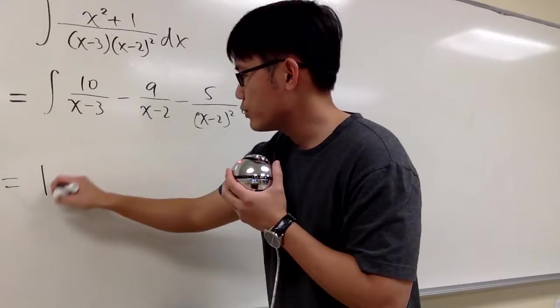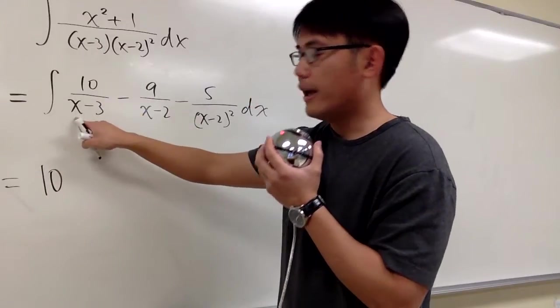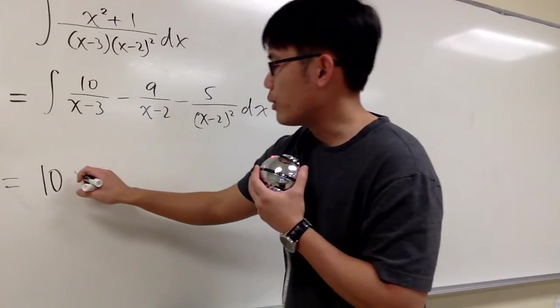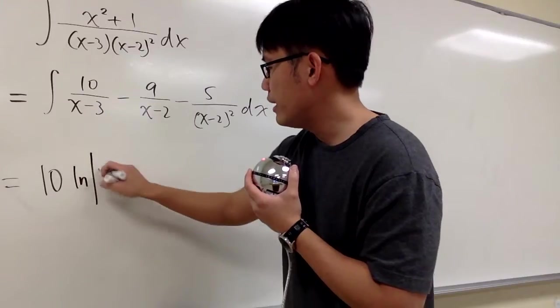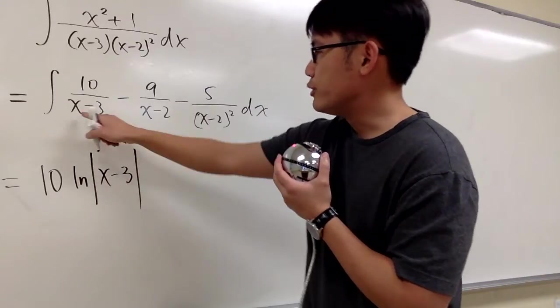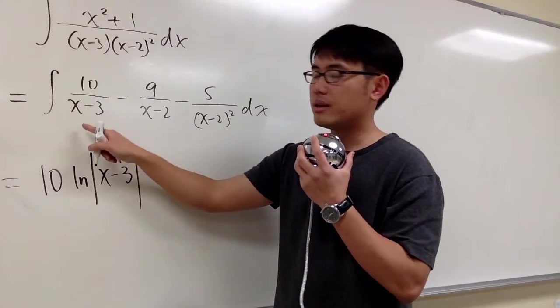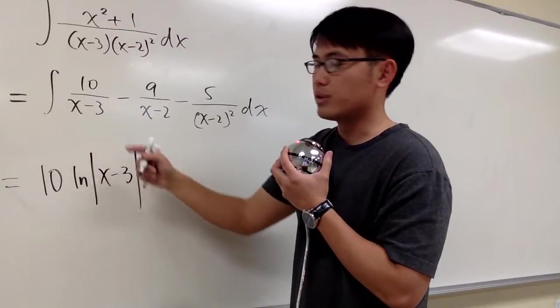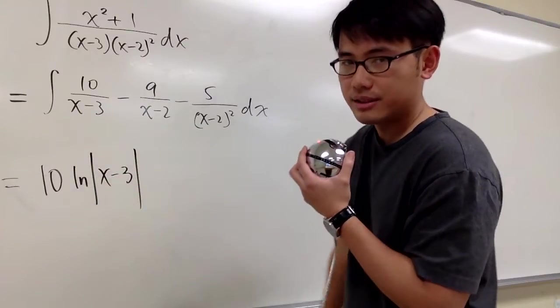For the first one, let's write down the number. We have 10. And then something over x minus 3. The anti-derivative for that will be ln, absolute value, x minus 3. And you check the derivative of inside on the denominator. The derivative of x minus 3 is just 1, so you don't need to divide by anything else.